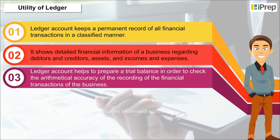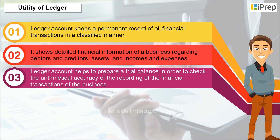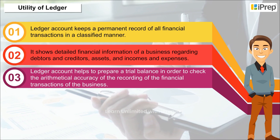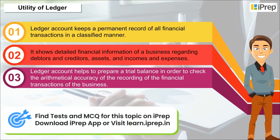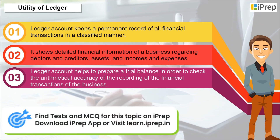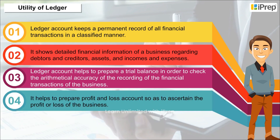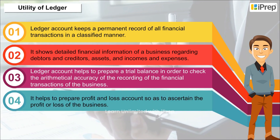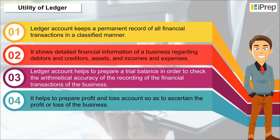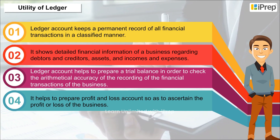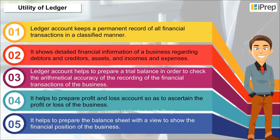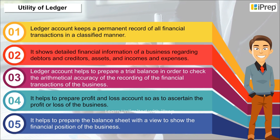Three, ledger accounts help to prepare a trial balance in order to check the arithmetical accuracy of the record of financial transactions of the business. Four, it helps to prepare the profit and loss account so as to ascertain the profit or loss of the business. Five, it helps to prepare the balance sheet to show the financial position of the business.